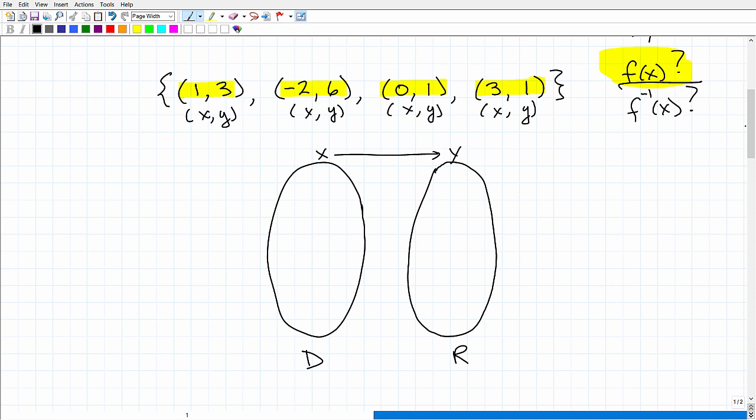Now at this point, we don't know if this is a function or not, but a mapping diagram is a great way to model what's going on with a set of ordered pairs. Okay. It's a good way to learn about functions and the concepts of functions, because it's a nice, easy way to see things. All right. So how does this work? All right. So here we have the point (1, 3). So the X value here is one. Okay. And the Y value is three.